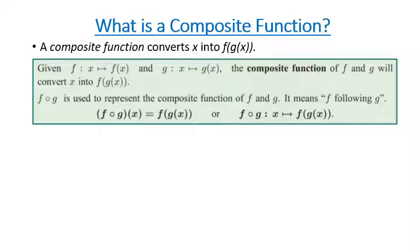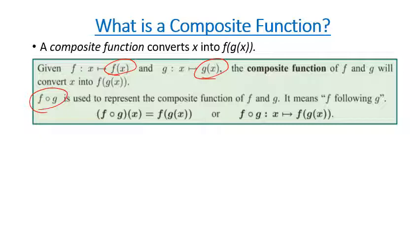So first we need to look at what a composite function is. Basically, a composite function converts a variable — which is usually x — into a combination of two functions. So we can see here that we've got a function f of x and a function g of x. Now, if we've got fog here, that means we get the g of x, and then we put our answer for g of x into the f of x. So fog basically means follow on from.